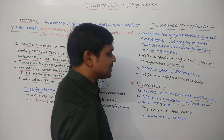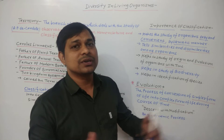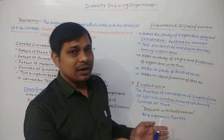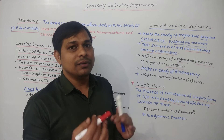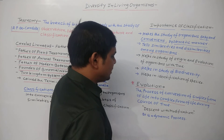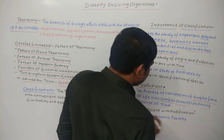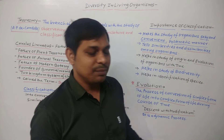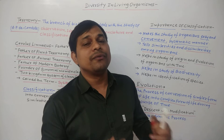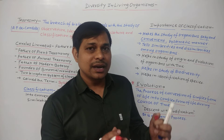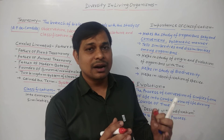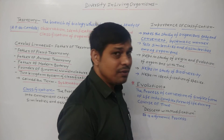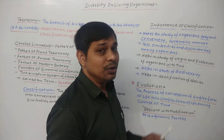Evolution is a dynamic process — it is always ongoing. Simpler forms of life continuously evolve and develop into complex forms of life. Evolution is also described as 'Descent with Modification,' meaning that offspring are more advanced and more complex than their parents. That is the meaning of descent with modification, and that is Evolution.